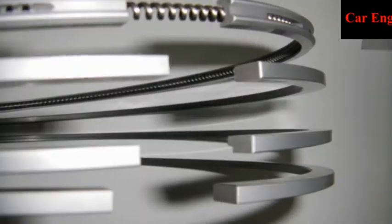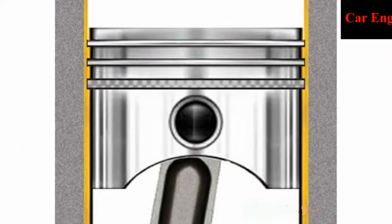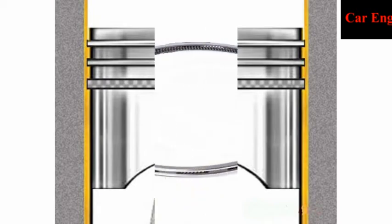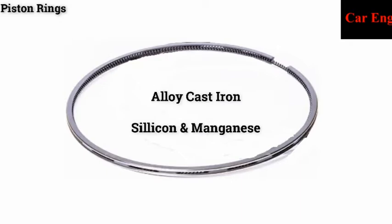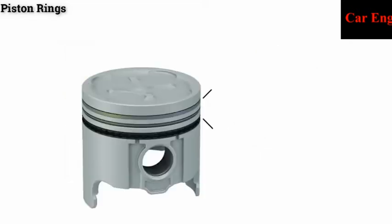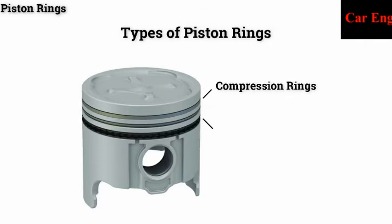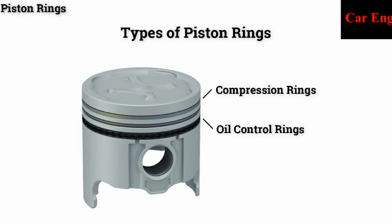The piston rings are fitted into the grooves of the piston to maintain a good seal between the piston and the cylinder wall. The function of piston rings is to form a seal for the high-pressure gases from the combustion chamber entering into the crankcase. The material generally used for piston rings is fine-grained alloy cast iron containing silicon and manganese. It has good heat and wear-resisting qualities. Mainly there are two types of piston rings available: compression rings and oil control rings.